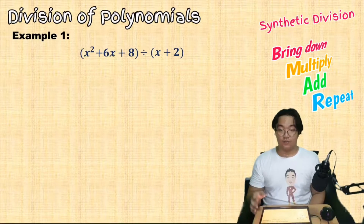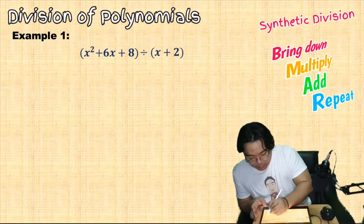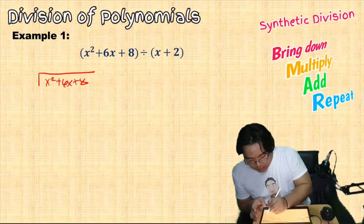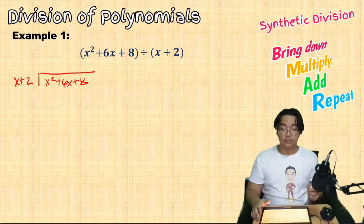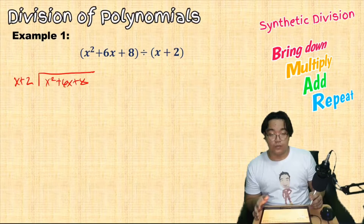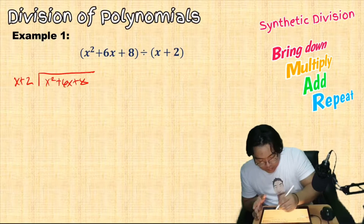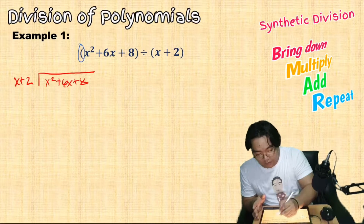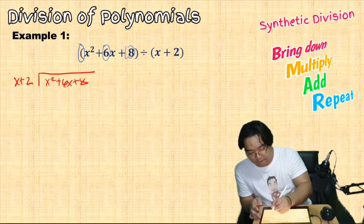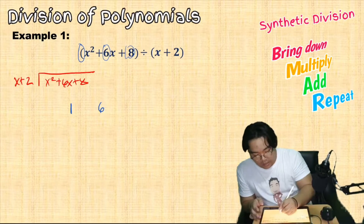Let's have an example. If we divide x squared plus 6x plus 8 by x plus 2, in the long division process we arrange it with x squared plus 6x plus 8 divided by x plus 2. In synthetic division, instead of using all the terms with variables, we use their coefficients — the leading coefficient, the coefficient of x, and the constant.